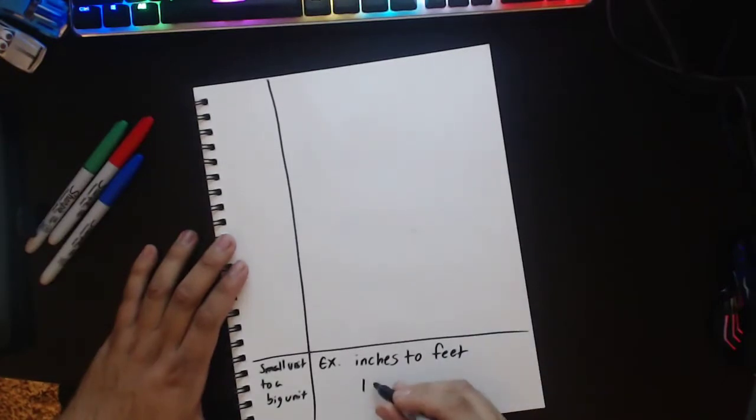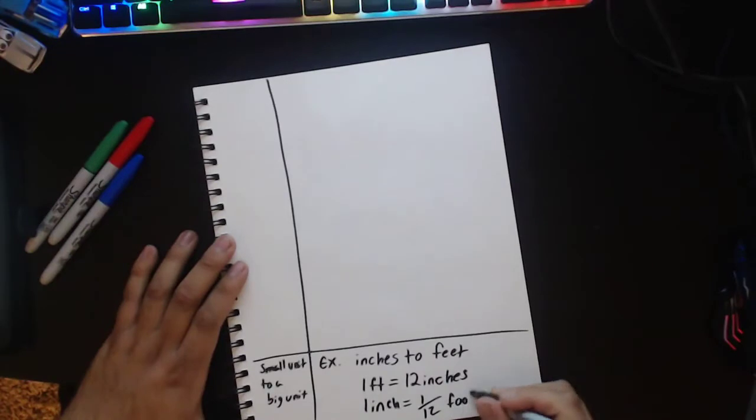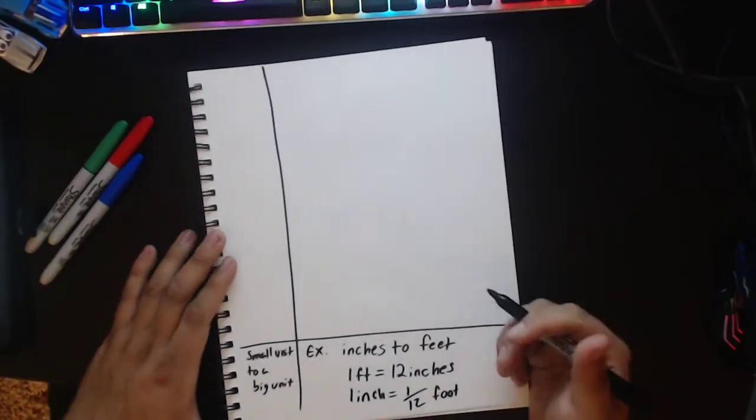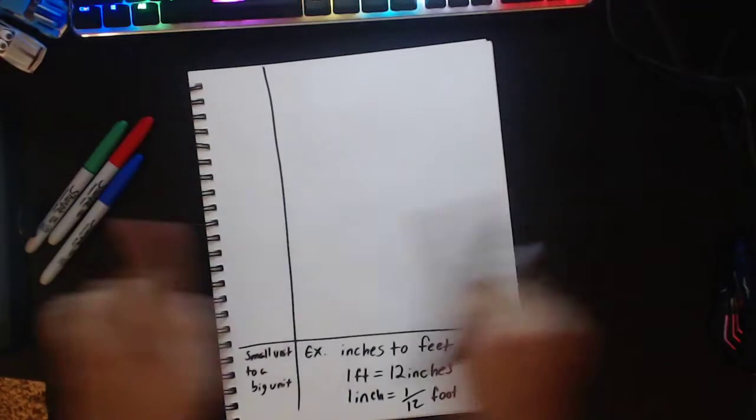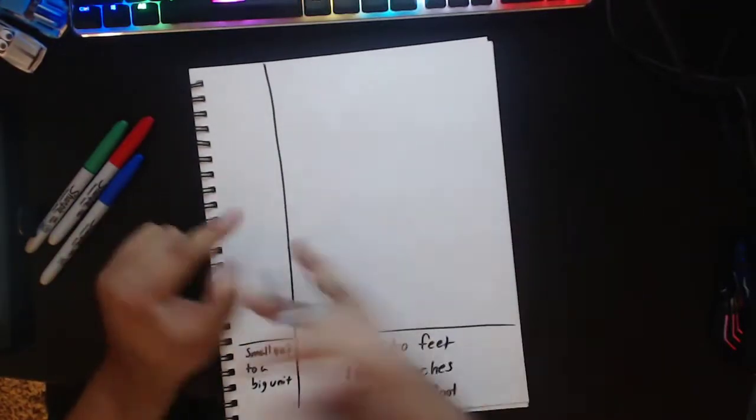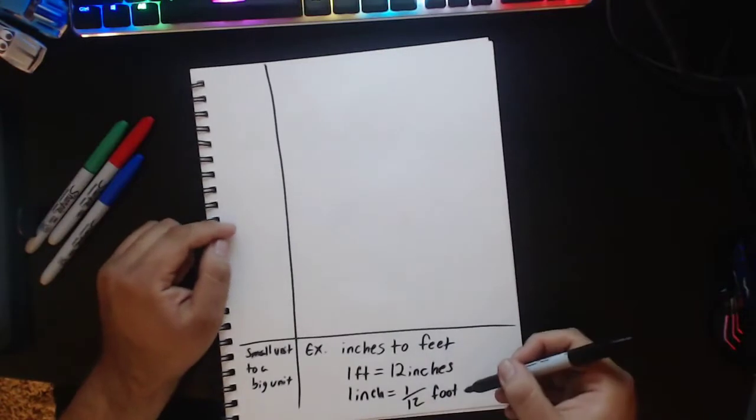And my example for that down here is going to be something like inches to feet. Well, I know that in one foot we have 12 inches. Well, then one inch is one twelfth of a foot. Because we're counting it up as a measurement and we have 12 inches, but we only have one out of the 12. So that's one out of 12 feet.